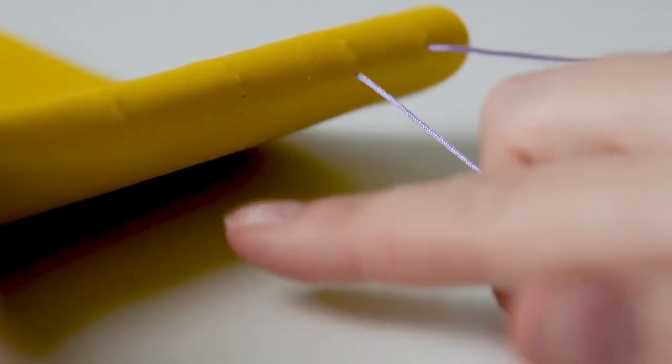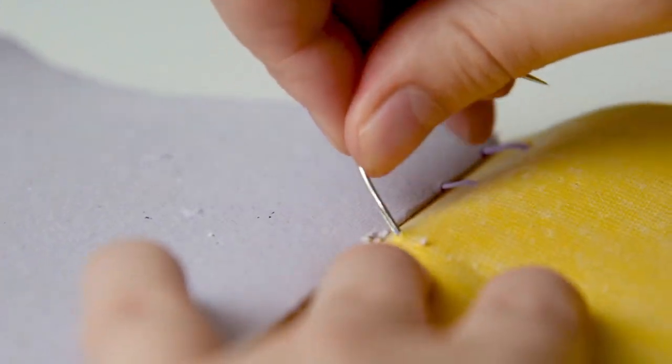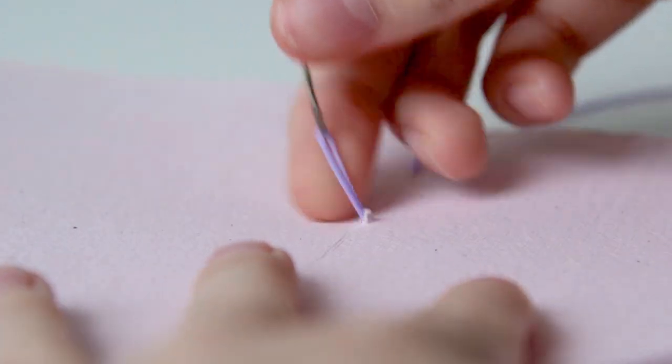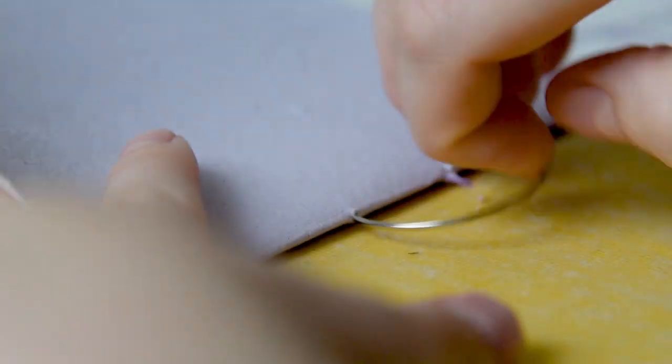Then you go to the next hole in the same row again, through the leather and then again through the signature. You keep doing this, matching the holes of the signatures with the holes of the leather.